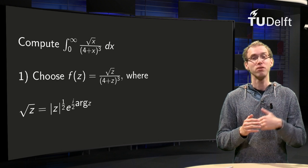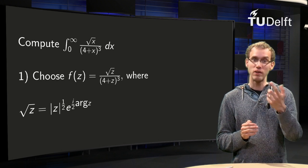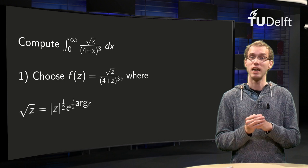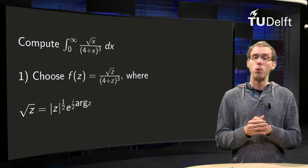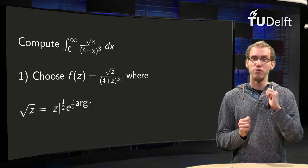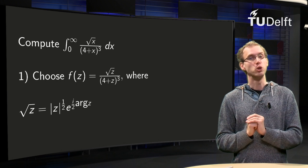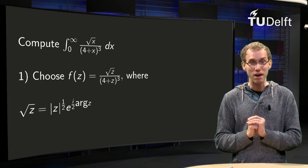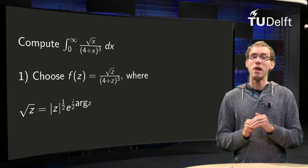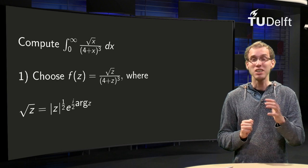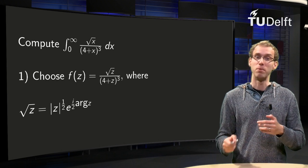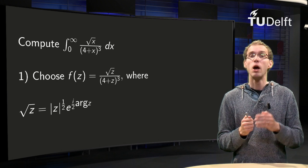We want to integrate from 0 to infinity the function √x divided by (4 + x³). Our first step is to choose f(z) and choose the contour. The f(z) is kind of obvious — it should be √z divided by (4 + z³).